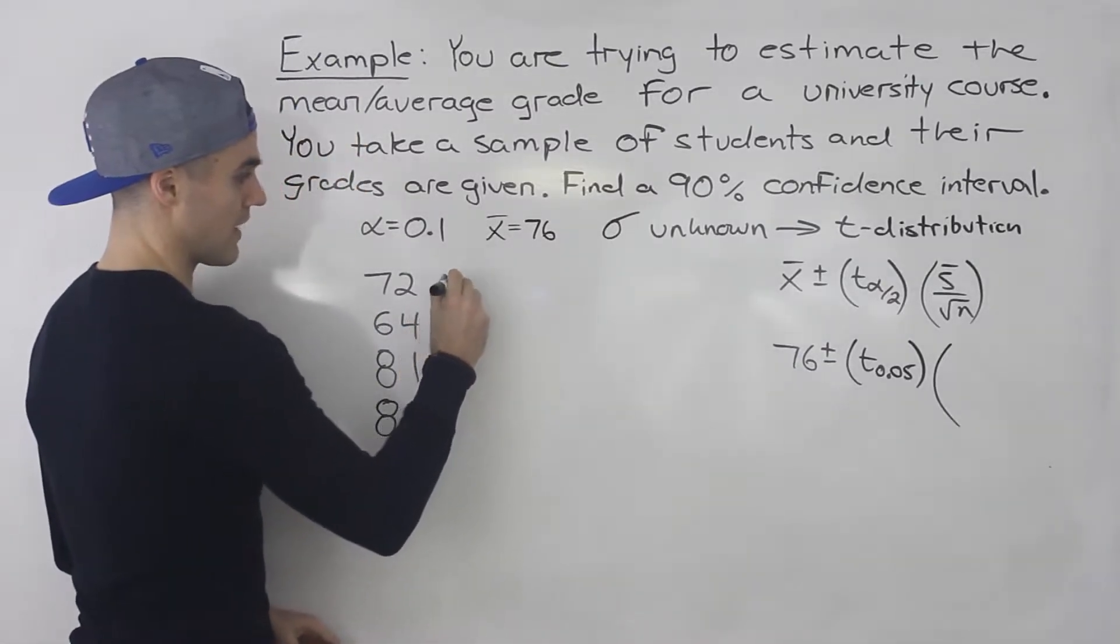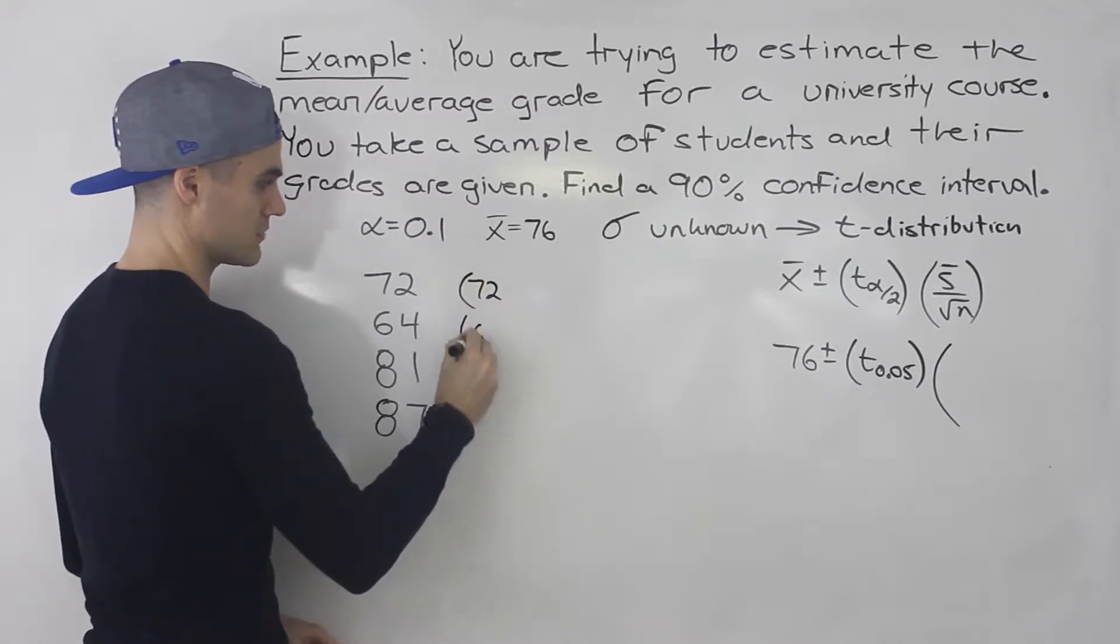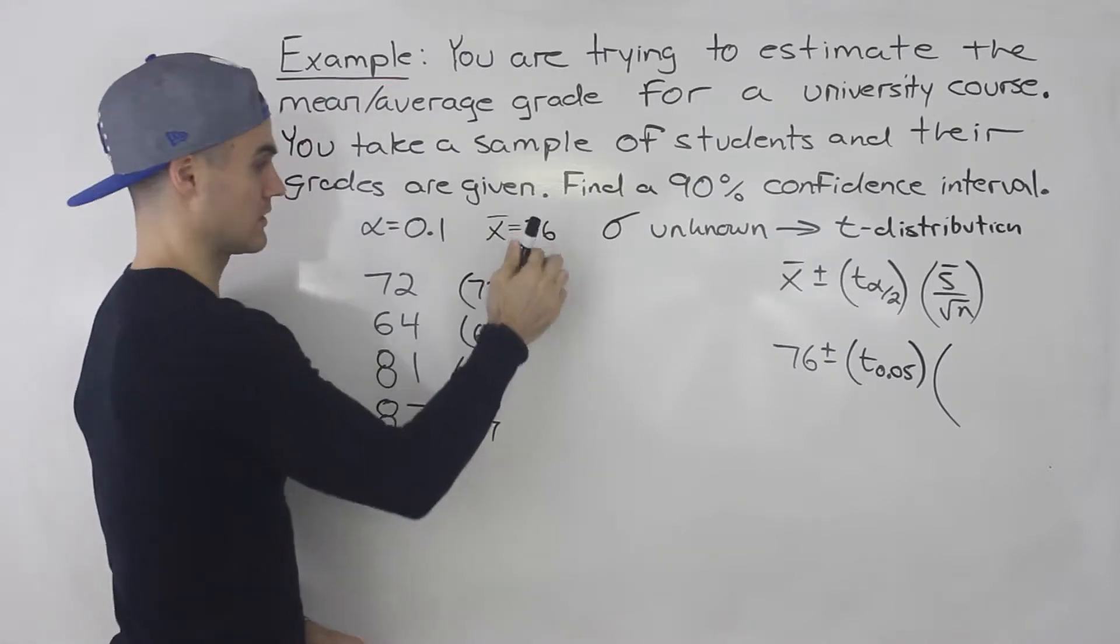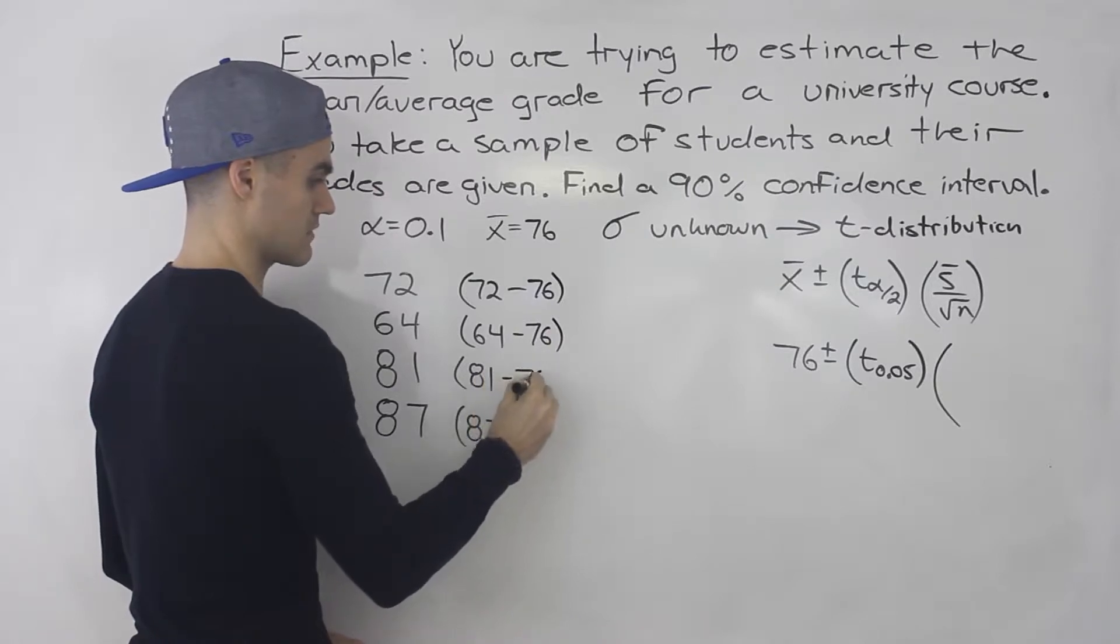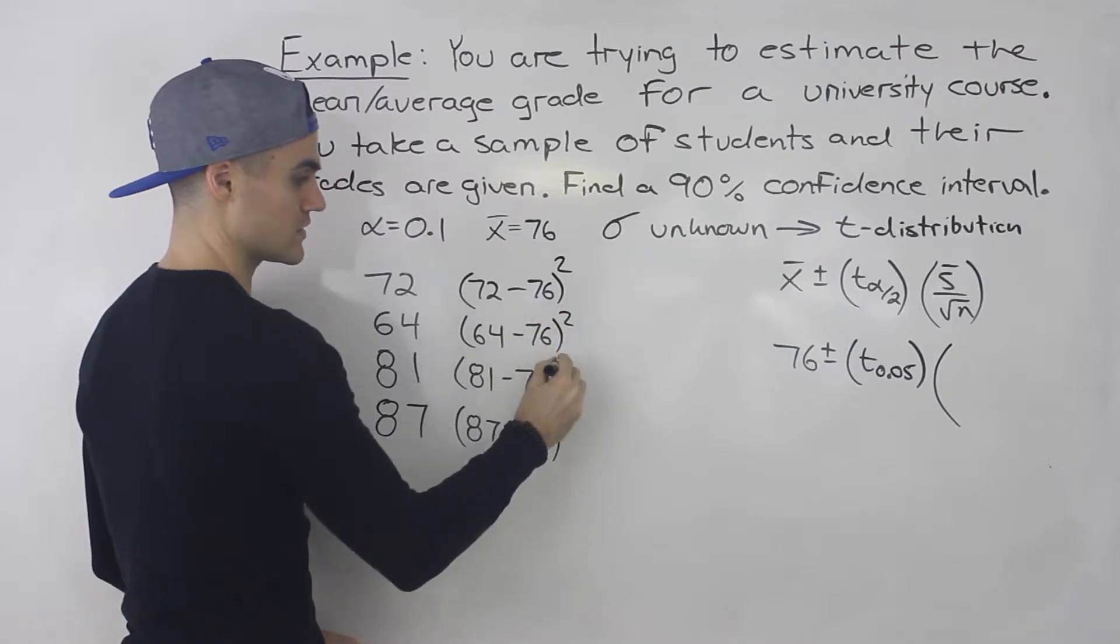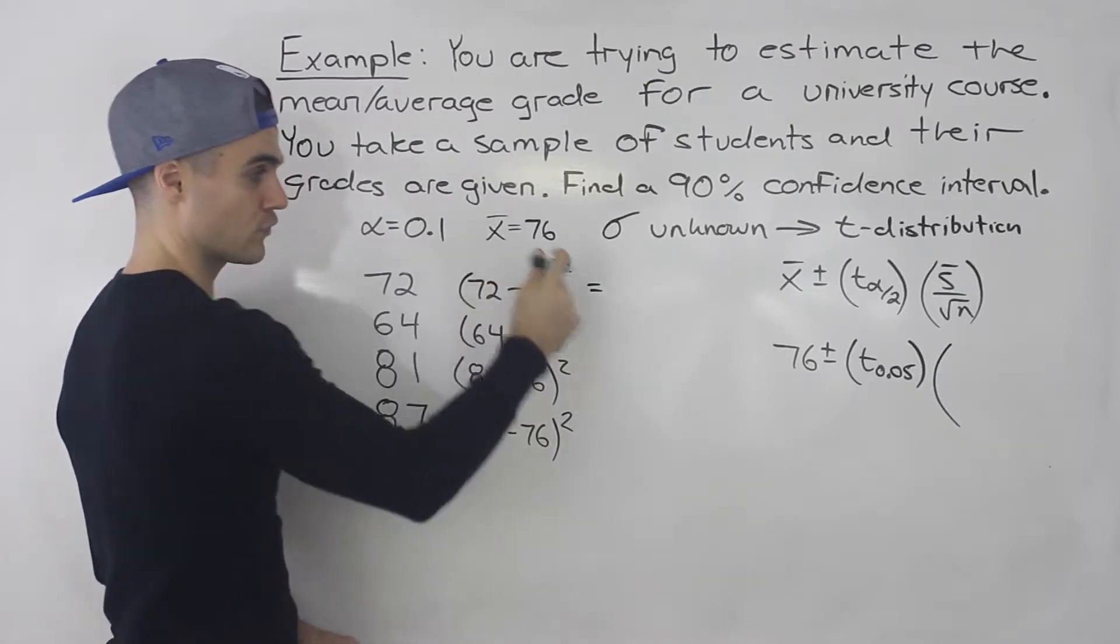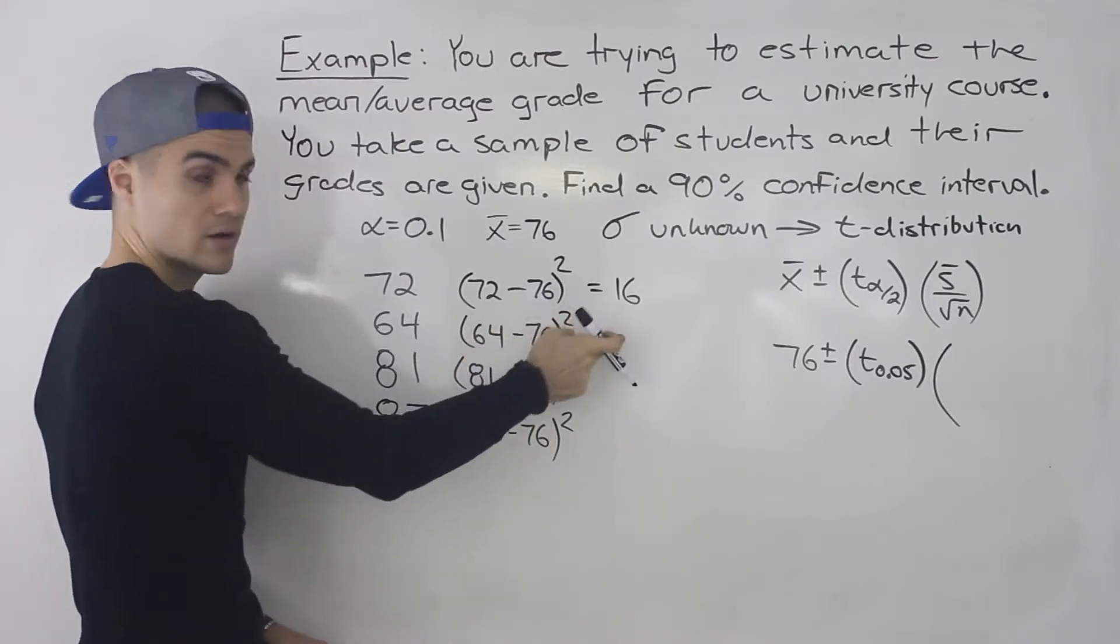And so what you do then is you take all of these observations. So I'm going to put them in brackets. And then you subtract the sample mean that you found. So that's going to be 76. This is going to be minus 76, minus 76, minus 76. And then you square all of these numbers over here. And so when you do that, 72 minus 76, that's negative 4. Negative 4 squared is positive 16. All these numbers will always be positive because if you get a negative here and you square it, it's going to be positive.